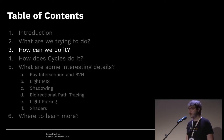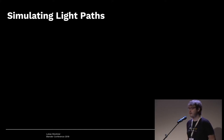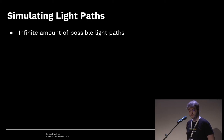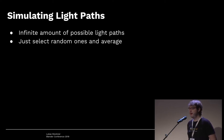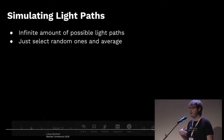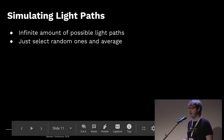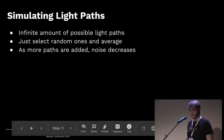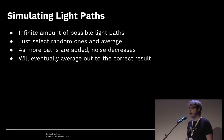We want to simulate random light paths. There's an infinite amount of possible light paths, so we obviously can't simulate all of them. Instead, we select a lot of random light paths and average over them. Each path will hopefully hit the camera at some point. If we average over a billion of them, eventually we end up with a rendered image. As we add more and more light paths, the result gets better, and we can mathematically show we will average out to the correct result.